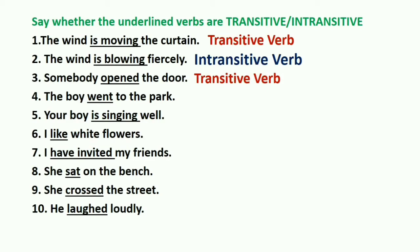'The boy went to the park.' The boy went what? No answer. The boy went whom? No answer. Remember, a transitive verb has only two friends: 'what' and 'whom.' Since neither answer is given in this sentence, this is an intransitive verb.